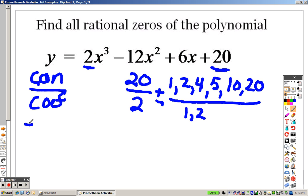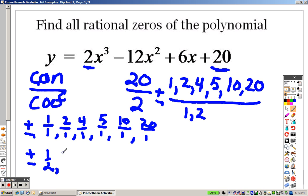So here's basically what that means. I have positive and negative of all of these. I have to look at 1 over 1 as a choice, 2 over 1, 4 over 1, 5 over 1, 10 over 1, 20 over 1. Then I have to look at plus or minus 1 over 2, 2 over 2, 4 over 2, 5 over 2, 10 over 2, and 20 over 2 as choices.